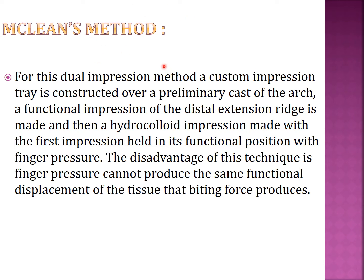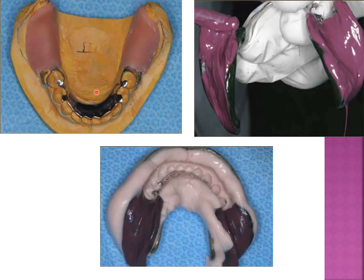For Macklin's method: a custom impression tray is constructed from a primary cast of the arch. A functional impression of the distal extension ridge is made, and then an alginate or hydrocolloid impression is made with the first impression held in the functional position with finger pressure. The disadvantage is that finger pressure cannot produce the same functional displacement of the tissue that biting forces can.